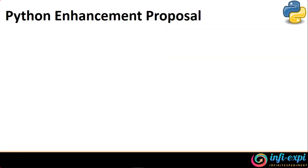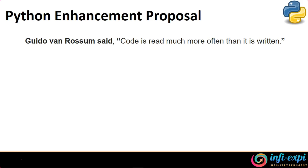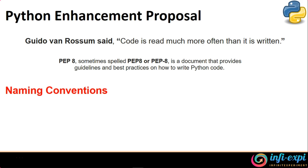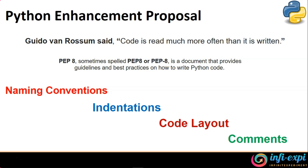I have summarized the multiple components that need to be discussed under the Python Enhancement Proposal. There's a saying by Guido Van Rossum: code is read much more often than it is written. That's true because we write code once and then we read it thrice. So readability is very essential. We need to make our code highly readable. The components under PEP are: naming convention, indentation in Python, code layout, and comments. I'll be coming up with multiple videos on these sections. This video is focused on naming conventions.